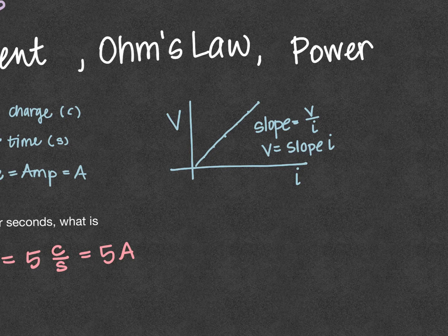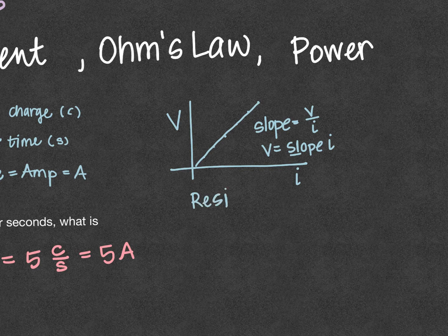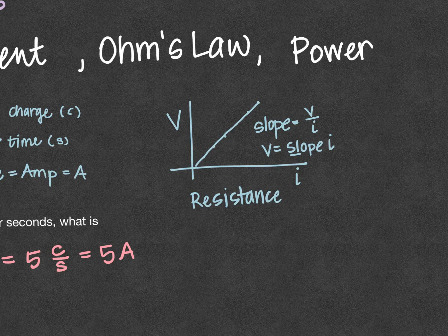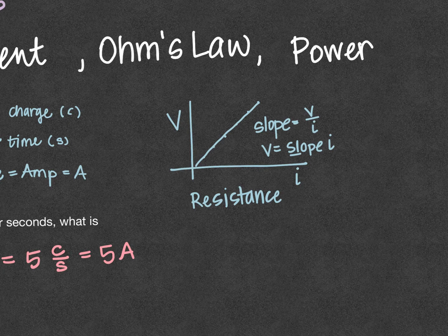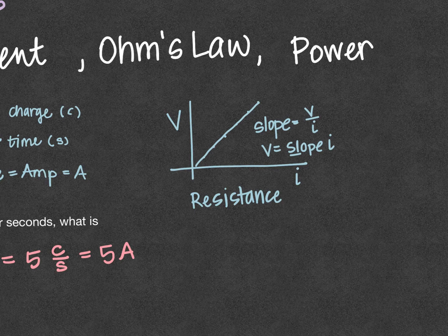He defined this slope as being the resistance, which is like a measure of how much friction is in a circuit. The resistance tells me how difficult it is for the electrons to flow.